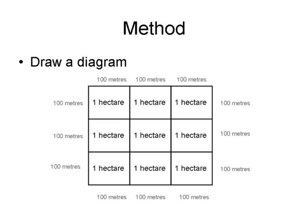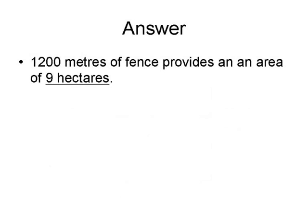You can see it's in a square. This time I count the fence sections: 1, 2, 3, 4, 5, 6, 7, 8, 9, 10, 11, 12. So 12 times 100 equals 1200 — that's the fence. Now, just by looking at my diagram, I can see in the middle I've got 1, 2, 3, 4, 5, 6, 7, 8, 9 hectares. So that's 9 times 1 hectare. My answer: 1200 metres of fence provides an area of 9 hectares.